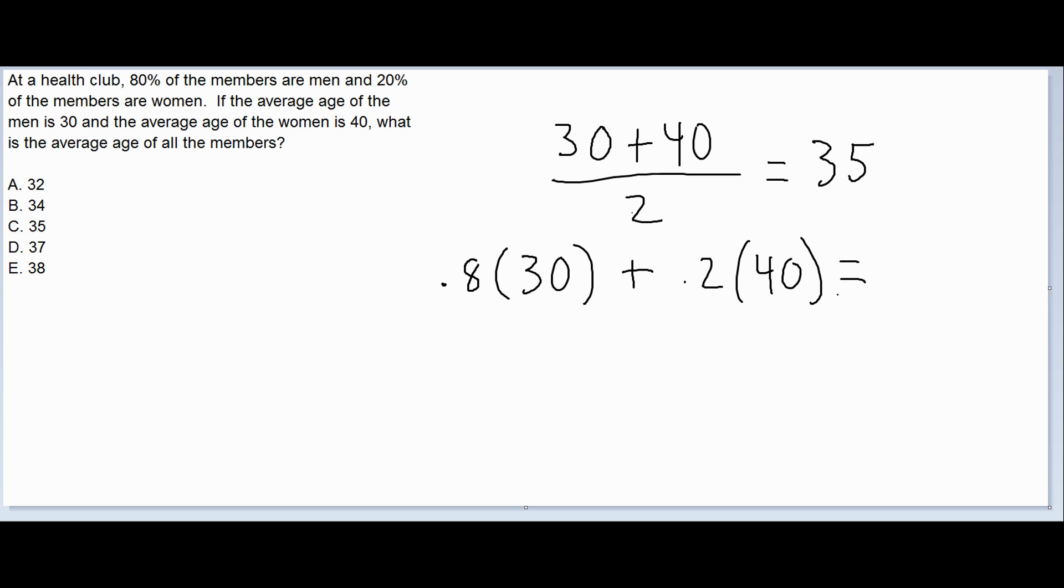So the overall average is weighted by the percentages of the subgroups that make it up. So 80% of 30 is 24 and 20% of 40 is 8, giving us an overall average of 32.